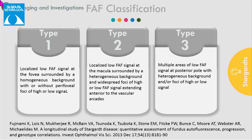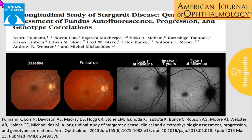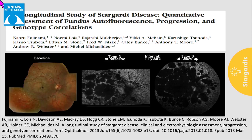Fujinami et al. gave a classification based on fundus autofluorescence findings in Stargardt's disease patients. Type 1: localized low autofluorescence signal at the fovea surrounded by a homogeneous background. Type 2: localized low autofluorescence at the macula surrounded by a heterogeneous background. Type 3: multiple areas of low autofluorescence at the posterior pole with a heterogeneous background. They found that type 1 had the slowest rate of progression compared to types 2 and 3, which could help prognosticate visual acuity and enroll patients in clinical trials.